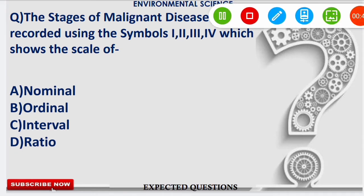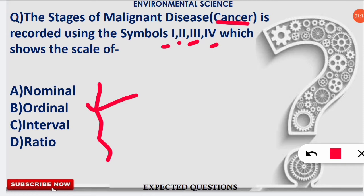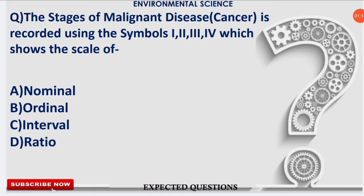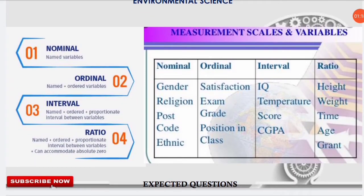The first question we are dealing with today: the stages of malignant disease, for example cancer, are recorded using the symbols 1, 2, 3, and 4. Which scale does this represent? The correct option is option B — ordinal scale. If you don't know about these kinds of scales, don't worry, because we are now going to cover the four important measurement scales.